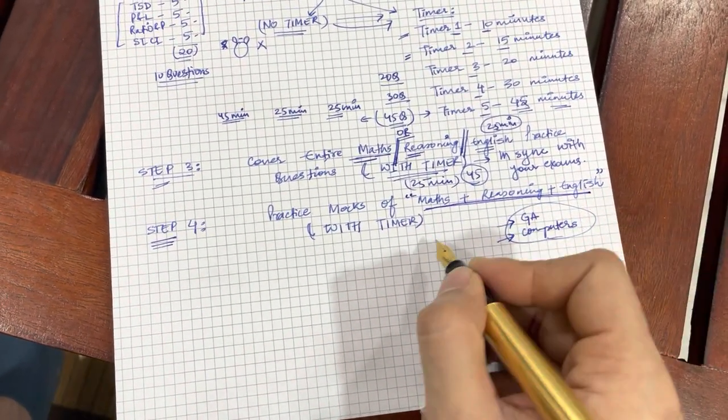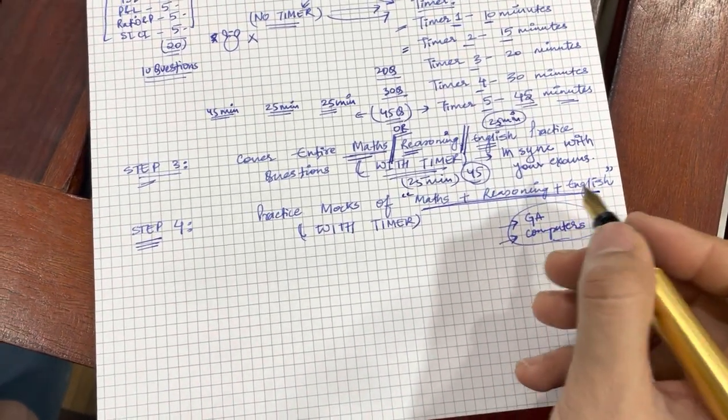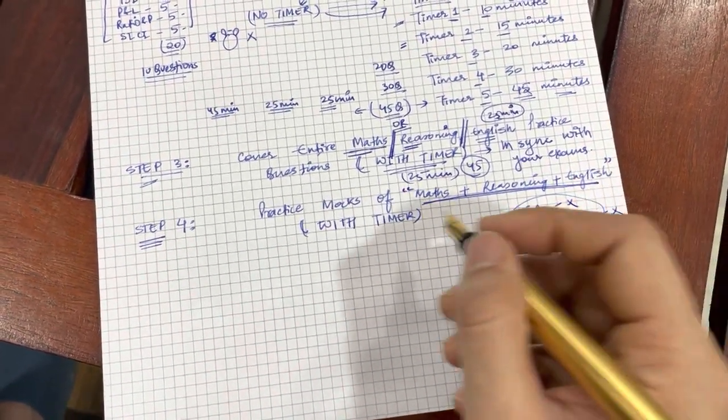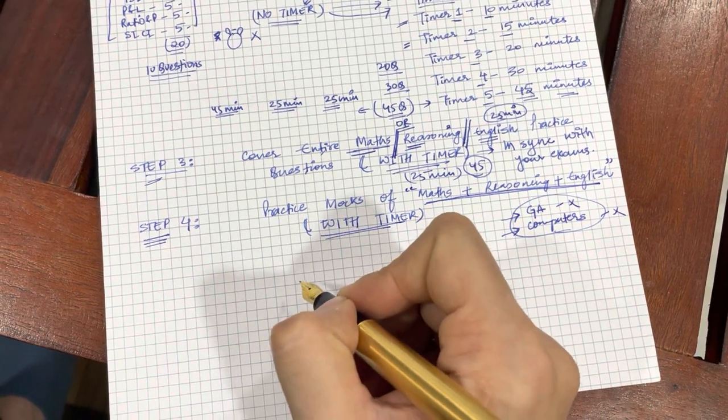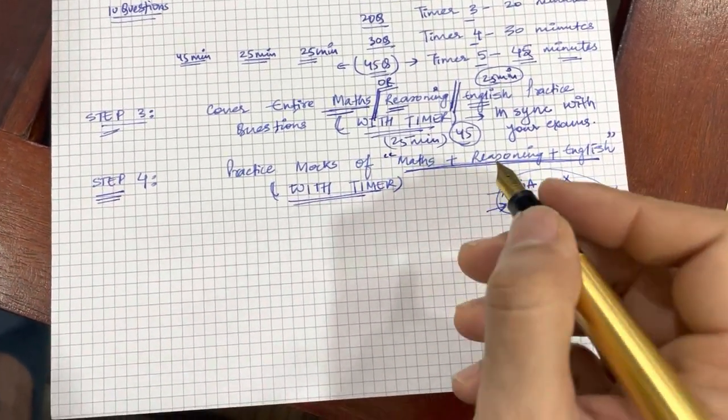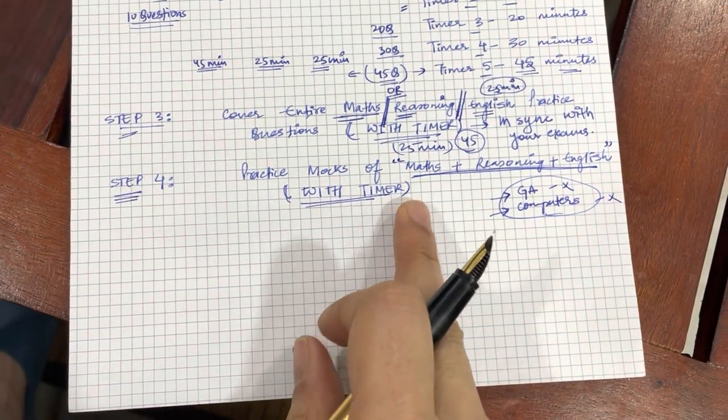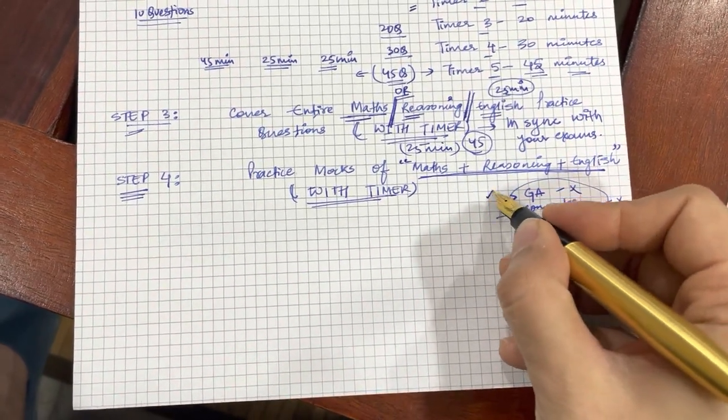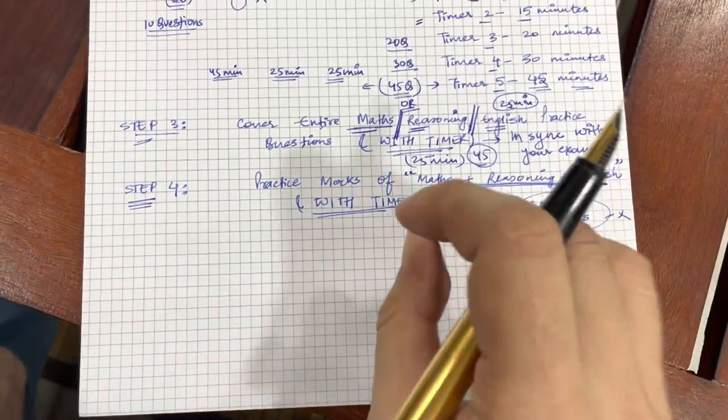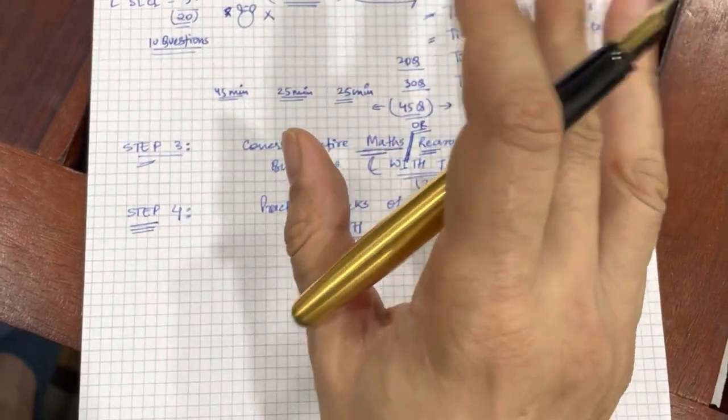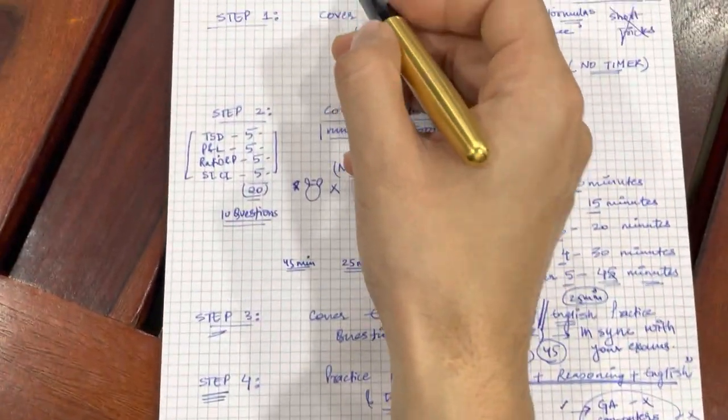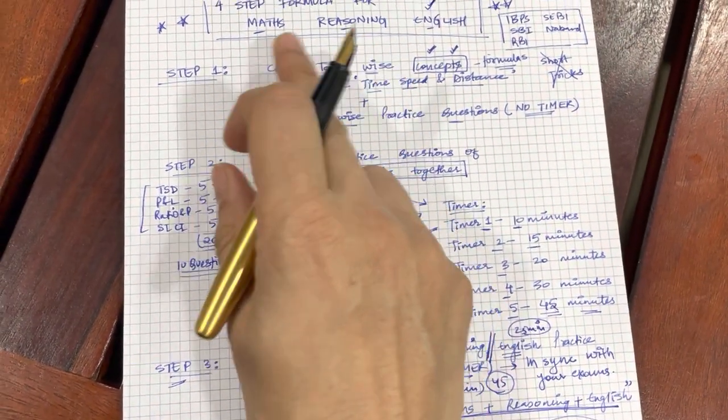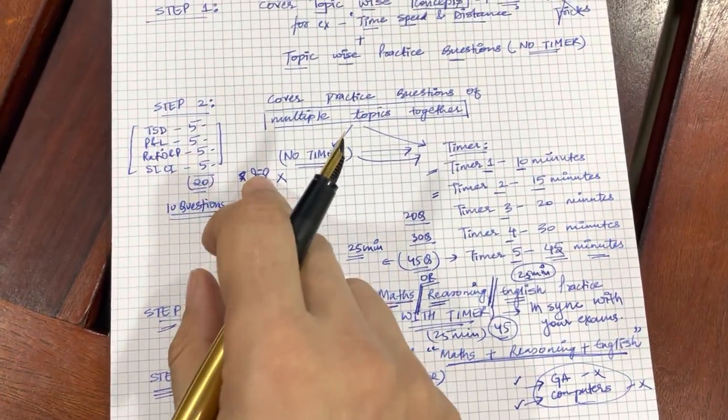You create a mock which has only maths, reasoning or English or if there is a mock with 4 subjects or 5 subjects, you eliminate these or remove these, do not consider them and with a timer, you practice these mocks. The objective here is to get used to writing a complete mock as it is going to happen in the examination. You can anytime add GA or computer awareness or any other subject later on. That is not going to be a very major issue. The issue arises with your concentration, with your practice in quant, reasoning and English and that is where these 4 steps come in very, very handy.